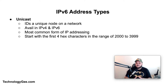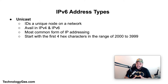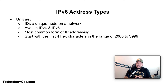IP version 6 supports three address types: unicast, multicast, and anycast. Unicast identifies a unique node on a network and is available in both IPv4 and IPv6. It typically refers to a single sender or single receiver, although it can be used for both. Unicast is the most common form of IP addressing, and globally routable unicast addresses in IPv6 start with the first four hexadecimal characters in the range of 2000 to 3999.